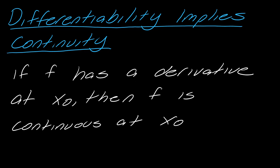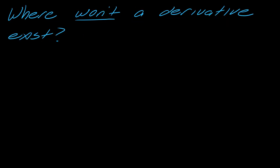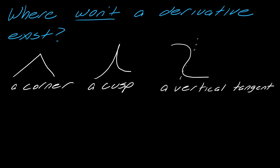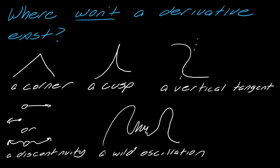And so it's probably good to also note then what won't have a derivative, so where won't a derivative exist? There's a couple places. And again, I highly recommend you write these down. So it won't exist at a corner, a cusp, a vertical tangent, at a discontinuity, and then at a wild oscillation. So in a lot of ways, these are kind of consistent with other things that we've seen in the past. So I highly recommend maybe you pause the video and write that down.